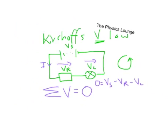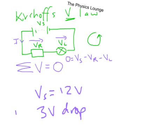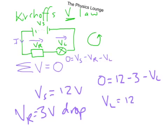So we'll do a very quick example of Kirchhoff's voltage law. If the supply voltage in this case is 12 volts, and we know that there is a 3 volt drop across the resistor, so VR is 3 volts, that means if we put these numbers into our equation, we've got 0 equals 12 minus 3 minus VL. So we know that VL equals 12 minus 3, which gives us 9 volts.